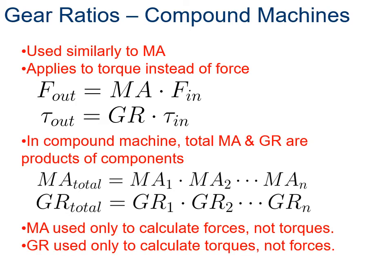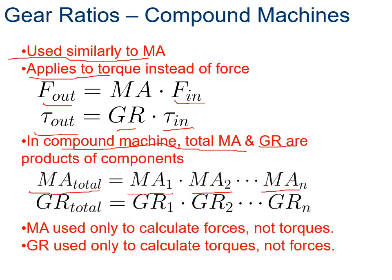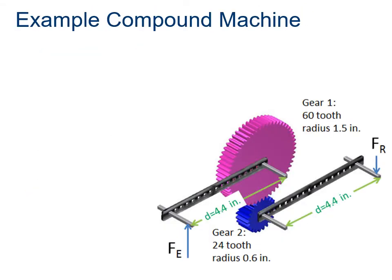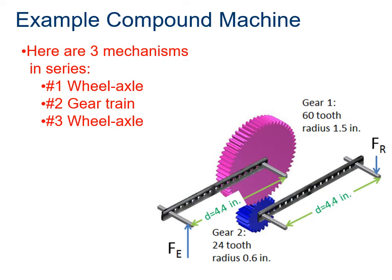For compound machines, gear ratios work similarly to mechanical advantage, except we apply it for torque instead of force. Mechanical advantage is force-out over force-in; gear ratio is torque-out over torque-in. For compound machines, we multiply individual mechanical advantages to get a total MA. Similarly, for total gear ratio, we multiply the individual gear ratios together. Mechanical advantage calculates forces; gear ratios calculate torques.